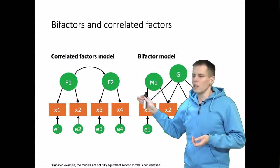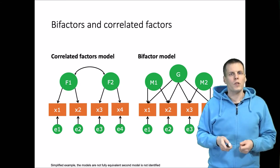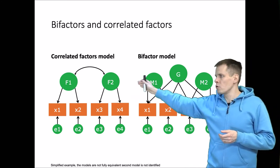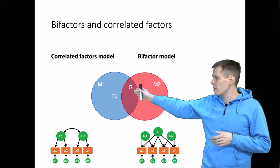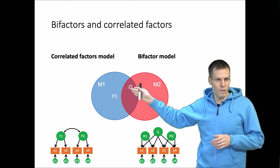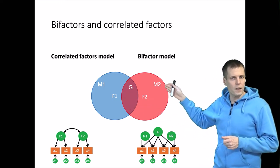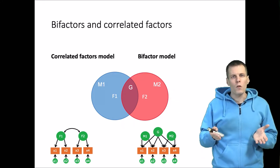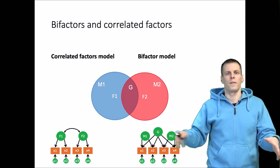Bifactor models can also be understood through the context of a model with correlated factors. Here we have F1 and F2, and the equivalent bifactor model has M1, M2, and G. The G factor represents whatever F1 and F2 have in common, and M2 is whatever F2 has uniquely from F1. A Venn diagram illustrates this: the overlapping area is quantified by the G factor, while the unique area of F1 is minor factor 1 and the unique area of F2 is minor factor 2.